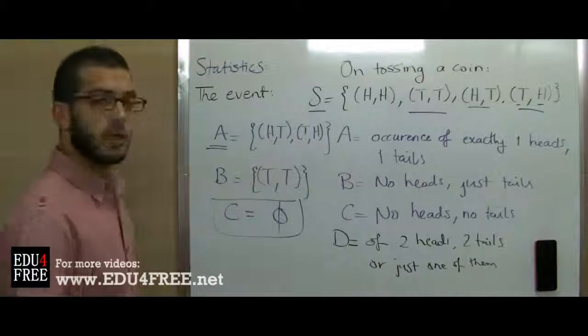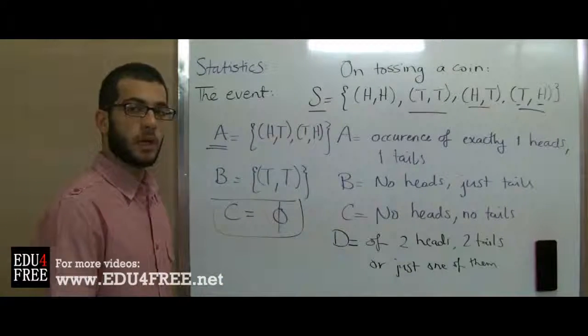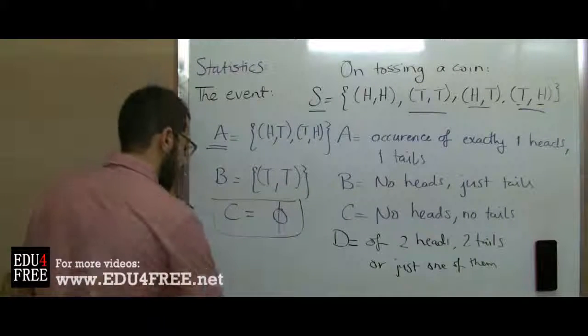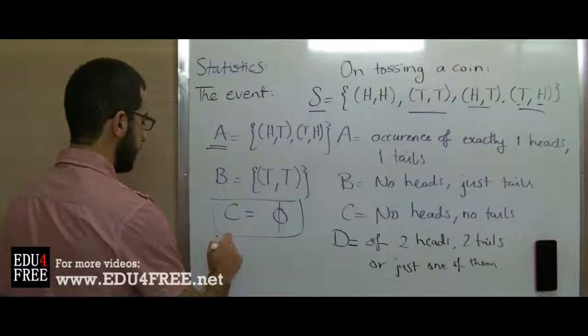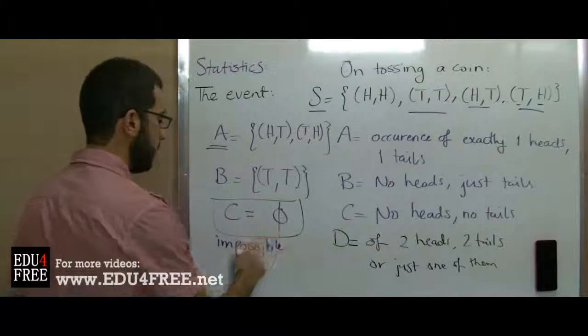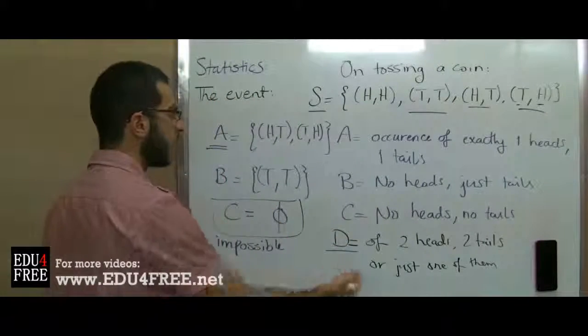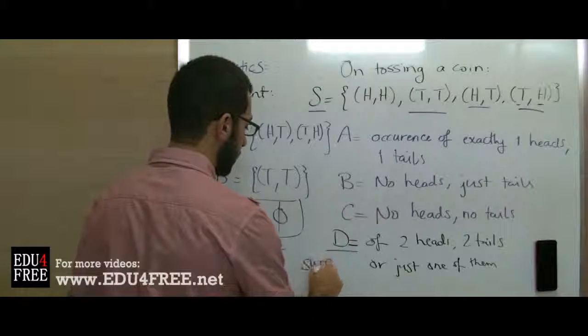So this is simply the event. This certain event is maybe also called a sure event. So C which equals phi is an impossible event. And D which equals S is a sure event.